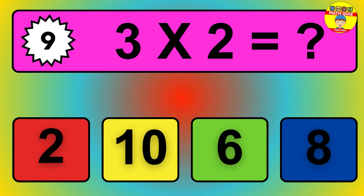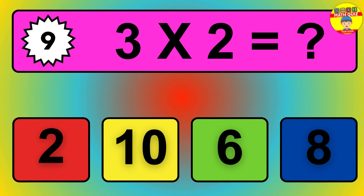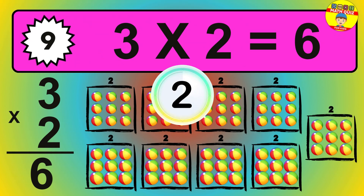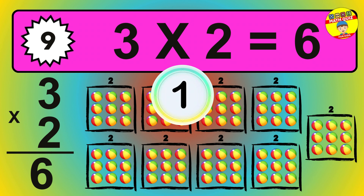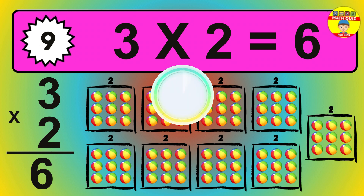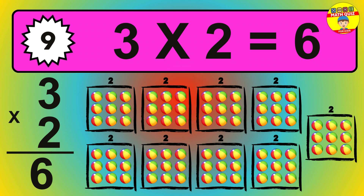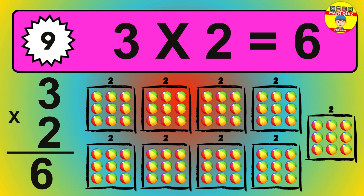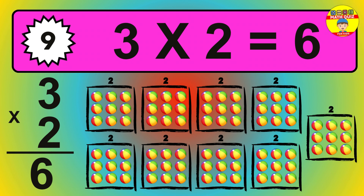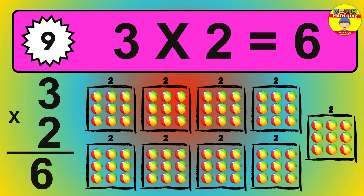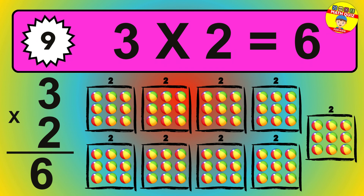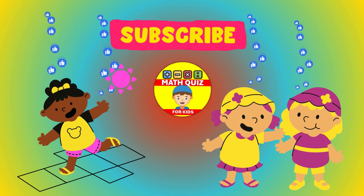Question 11. 6 times 2 equals what? The answer is 6 times 2 is 12. To calculate, we have 6 groups with 2 balls each one. So, how many balls do we have? 12 balls.